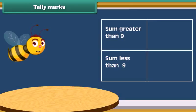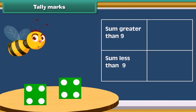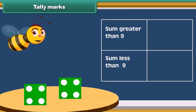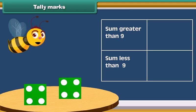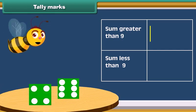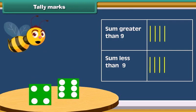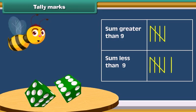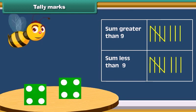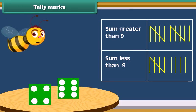Now let's do an activity. Take 2 dice and throw both dice together. Note how many times the sum of numbers on both dice is greater than 9, and also note the number of times the sum is less than 9. Do this activity 20 times and mark in the table each time.